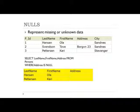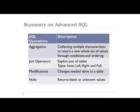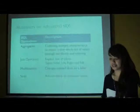We also have Nulls which will return fields that do not have any values. For example, you want to return address columns that do not have values. You just select the table and then indicate which column you want returned without values. The result set will yield the following. I have a summary here of all the advanced SQL concepts we've learned. We have aggregation, collecting multiple characters to return a new whole set that you defined. We have join operators which gives a link to the different tables. We have modifications which enables you to change or modify, add or delete records in the existing table. And Nulls that will return blank or empty fields in the column that you selected.